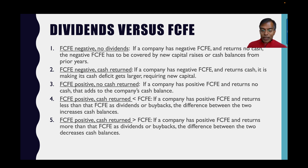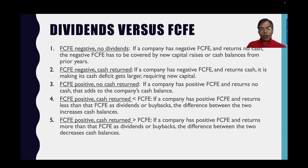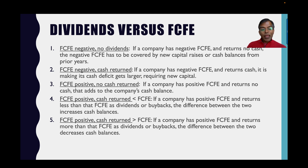And five, you can have a company with positive free cash flow to equity where the cash returned exceeds the free cash flow to equity — for whatever reason, not necessarily good or bad, this company is returning more than it can afford to. Under scenarios one, two, and five, you're burning through cash. Under three and four, you're building up cash. That's how companies end up with large cash balances or burn through them.